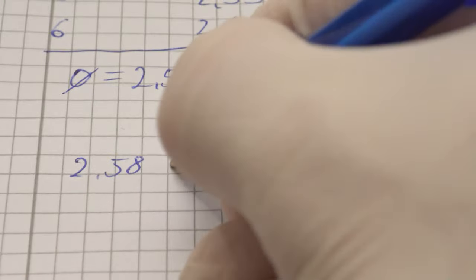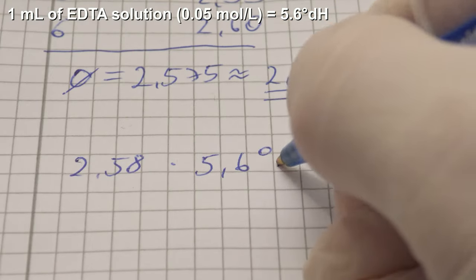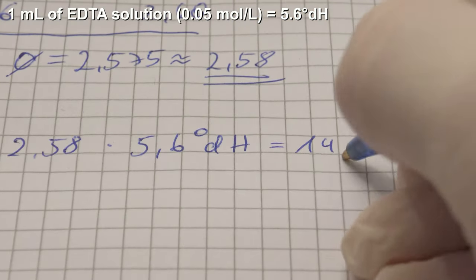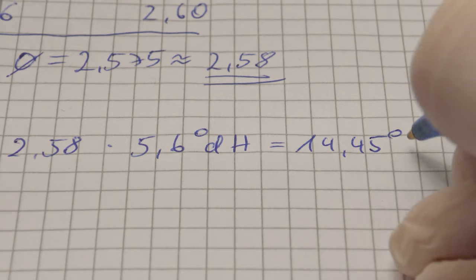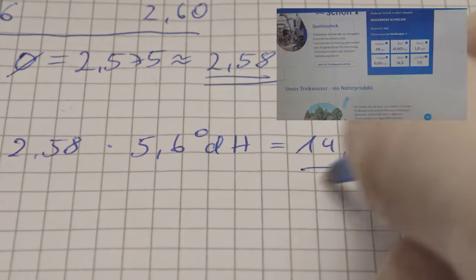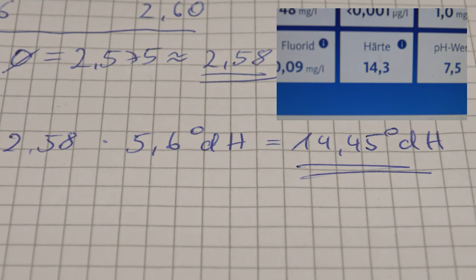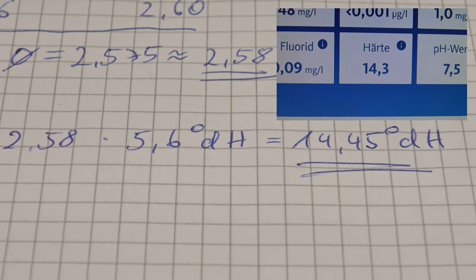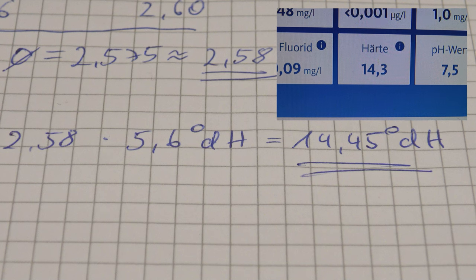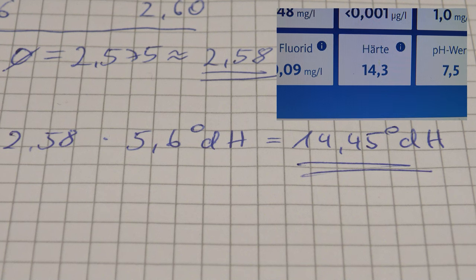Then per ml of EDTA solution, you get 5.6 degrees German hardness, which leads to a value of 14.45 degrees German hardness. This is quite high, but close to the value of the water utility. Due to the distance to the water source, it is expected that the values tend to vary, as it can be seen here.